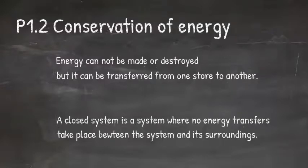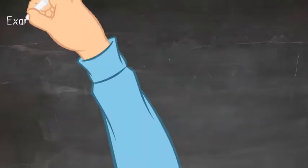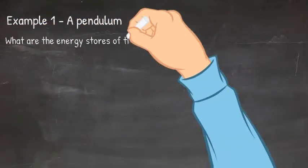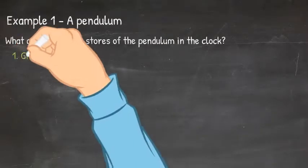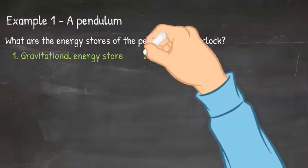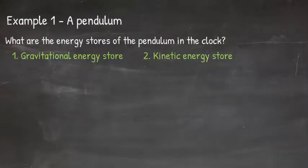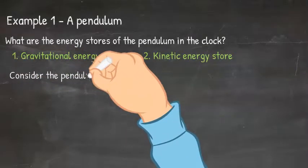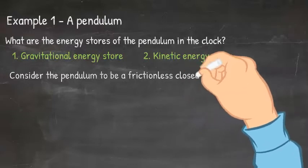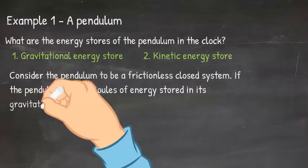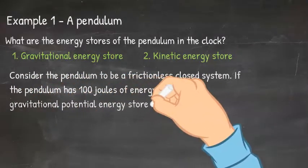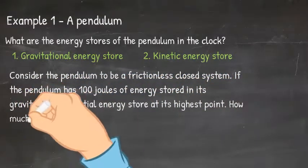Let's have a look at an example application: the pendulum in a grandfather clock. What are the energy stores of the pendulum in the clock? There is the gravitational potential energy store when the pendulum is at its highest point, and there is the kinetic energy store as the pendulum swings down through its lowest point. Now consider the pendulum to be a frictionless closed system. If the pendulum has 100 joules of energy stored in its gravitational potential energy store at its highest point, how much energy is transferred into its kinetic energy store at its lowest point?